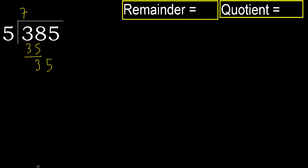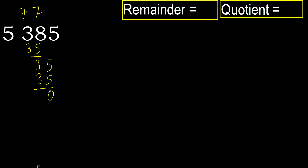35. 5 multiplied by 7 is 35, not greater. Ok. Subtract — 0. Next.